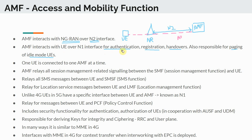The N1 interface is used for authentication, registration, and handovers — for example, what is called the XN handover in 5G, which is similar to X2-based handovers in LTE. It is also used for paging of idle mode UEs, so the AMF can page idle mode UEs for incoming data. One UE is connected to one AMF at a time, so there is a one-to-one mapping.